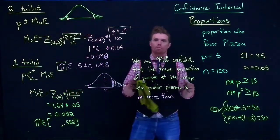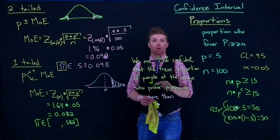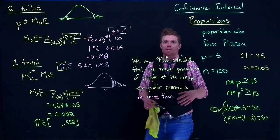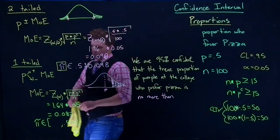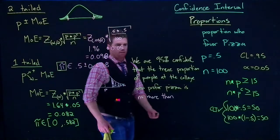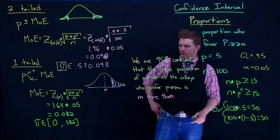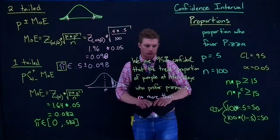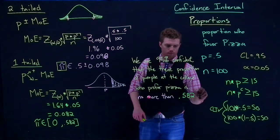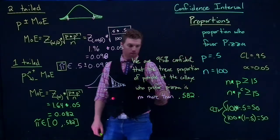Because the normal distribution goes from positive infinity to negative infinity. But when we are dealing with proportions, we actually have a floor and a ceiling. Remember, a proportion can't be greater than 1 or less than 0. So what we can do is just toss in a 0 right there. So I am 95% confident that the true proportion of people at the college who prefer pizza is no more than 0.582. There we go, I now did it one-tailed when I'm saying no more than.